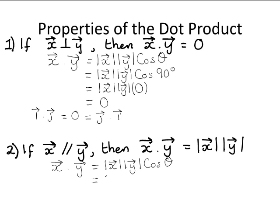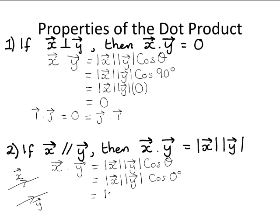This equals the modulus of vector x times the modulus of vector y. Now, if x and y are parallel to each other — suppose this is vector x and this is vector y — if they're parallel, the angle between them is zero as they never meet. So it's the cosine of zero. The cosine of zero degrees is one, so this equals the modulus of vector x times the modulus of vector y times one, which is just the modulus of vector x times the modulus of vector y. And again, you've proven this result.